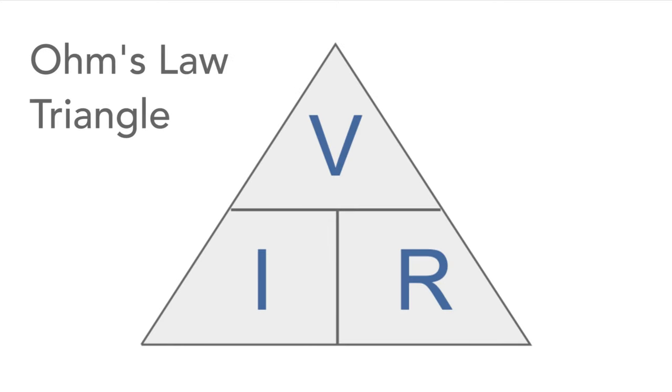It's quite easy to remember the simple equation V equals IR, and then do some simple manipulation each time we need it. Or alternatively, someone developed an easy way of remembering all of this. It's called the Ohm's law triangle.